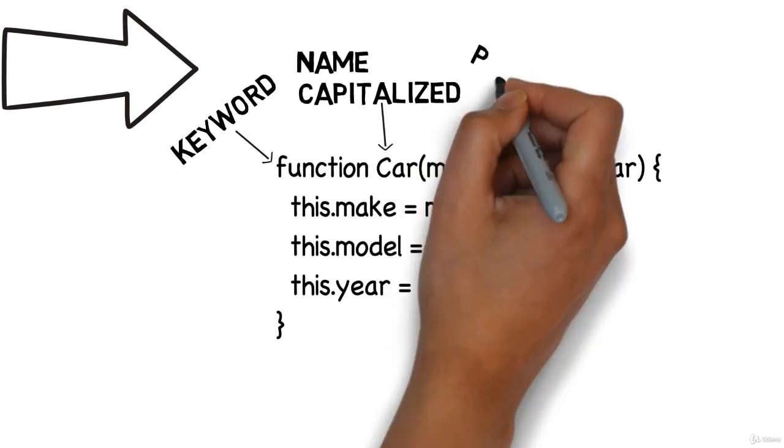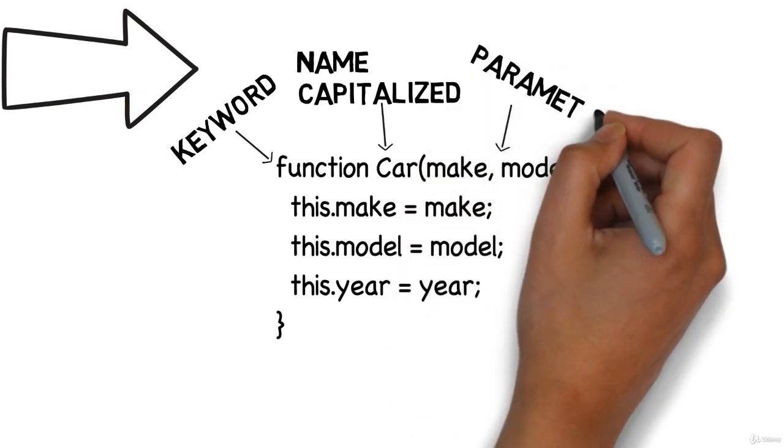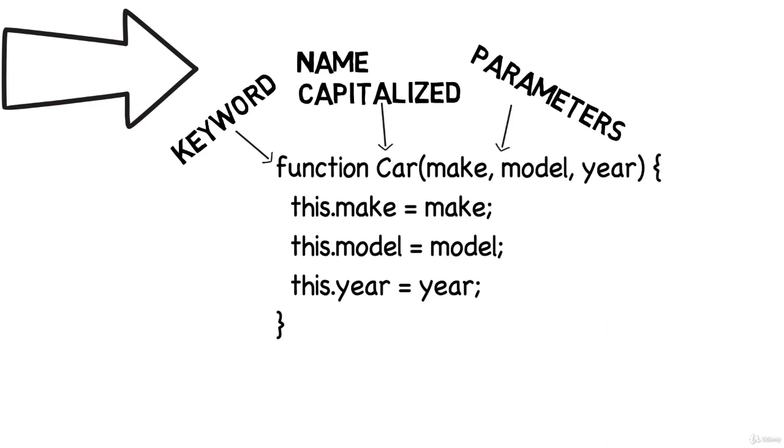The function has three parameters. Each one sets the value of a property in the object. The properties will be the same for each object created using this function.